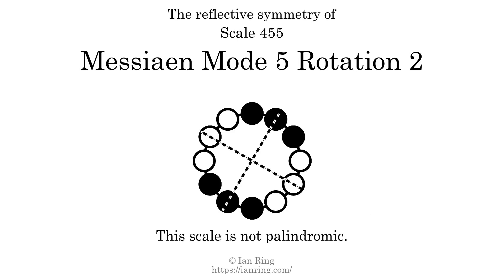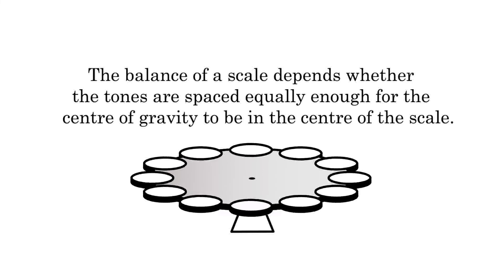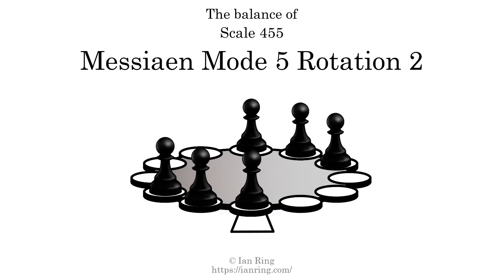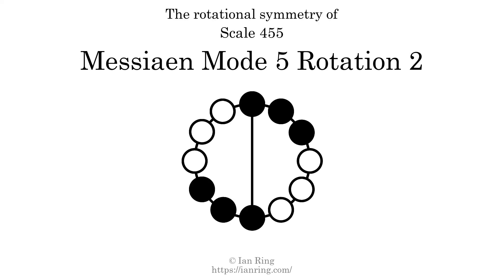This scale has reflective symmetry across two axes positioned at 1 semitone and 4 semitones above the root. This scale has a different pattern of intervals ascending and descending, so it is not palindromic. This scale has two ridge tones. The balance of a scale depends whether the tones are spaced equally enough for the center of gravity to be in the center of the scale. This scale is balanced. The inverse of a scale is a mirror image — it is what you get when the sequence of intervals is reversed. The inverse of this scale is scale 3185, also known as Messiaen Mode 5 Rotation 1. This scale is achiral, since it can transform into its own reflection by a rotational transformation. This scale has rotational symmetry at 6 semitones.